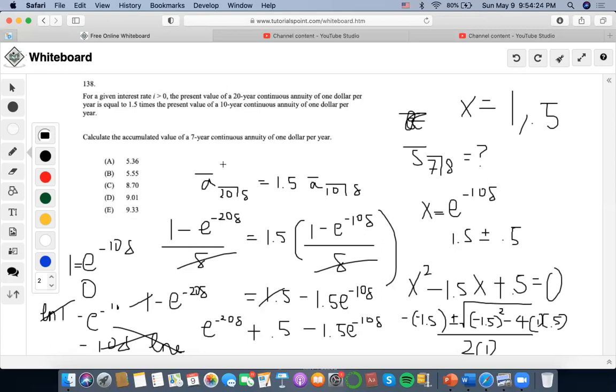Let's see 0.5. So it would be ln 0.5 equals negative 10 ln e. And you get rid of ln e, and then ln 0.5 divided by negative 10. So I get that the force of interest is 0.0693.